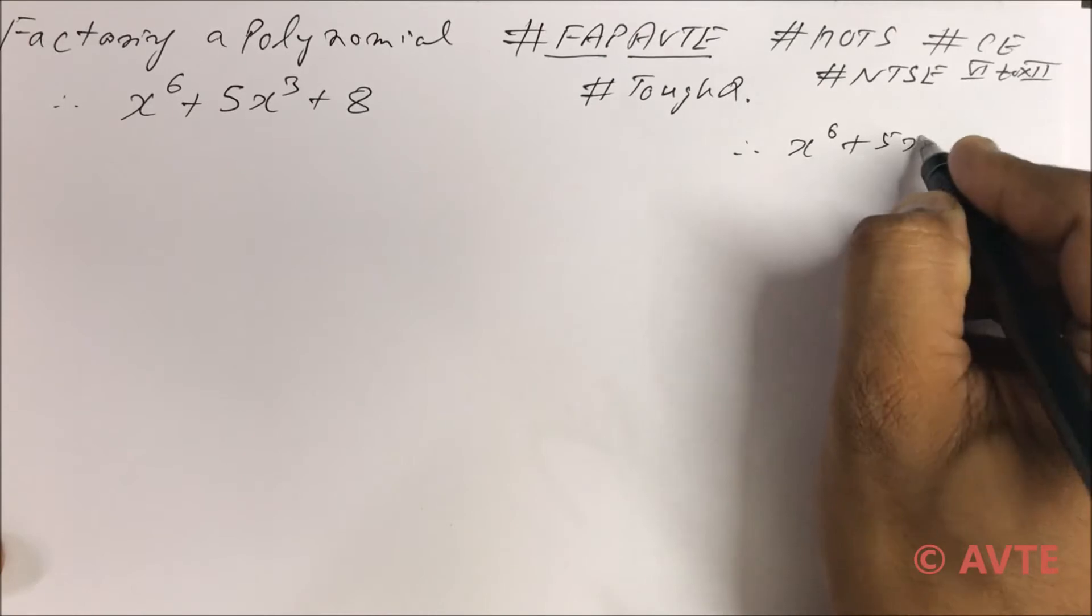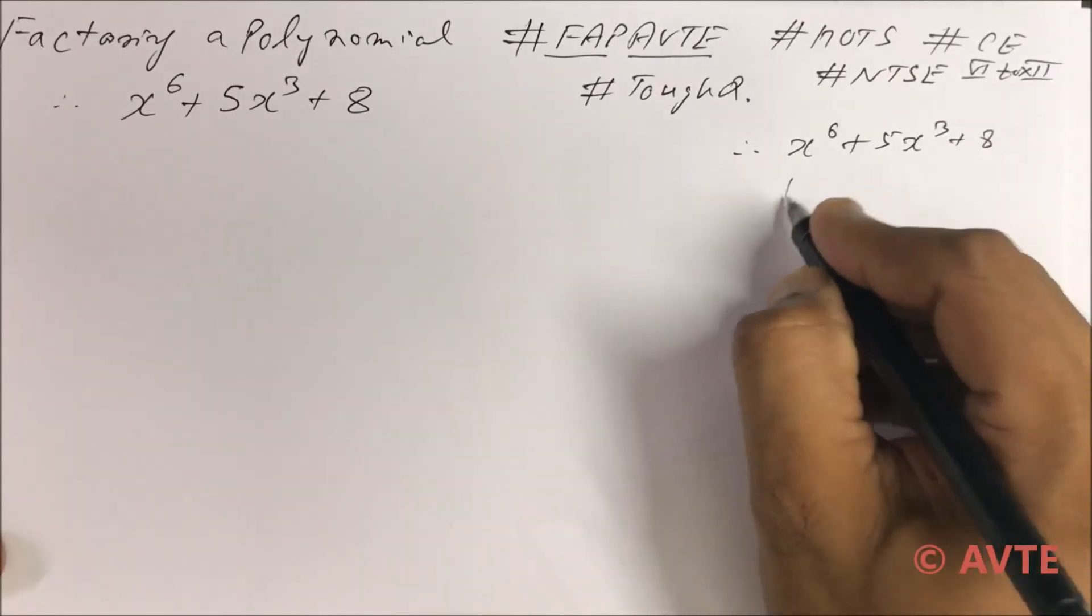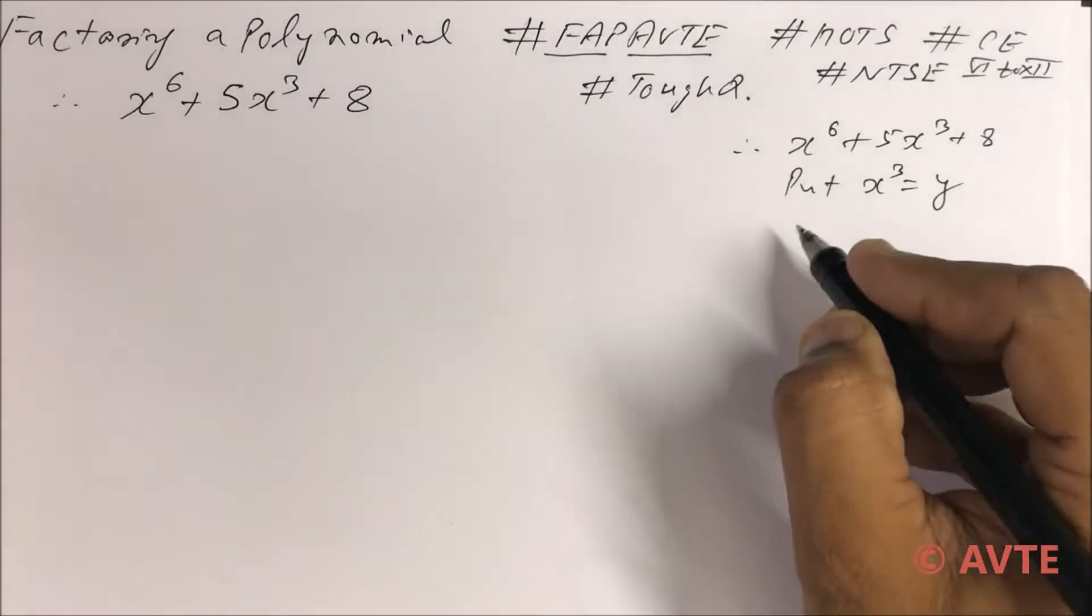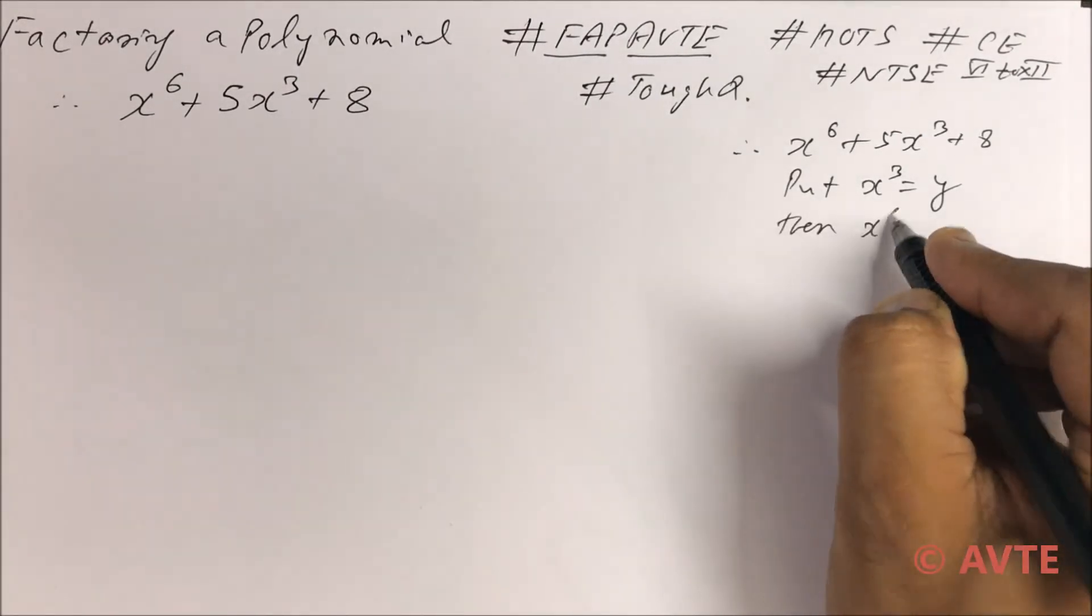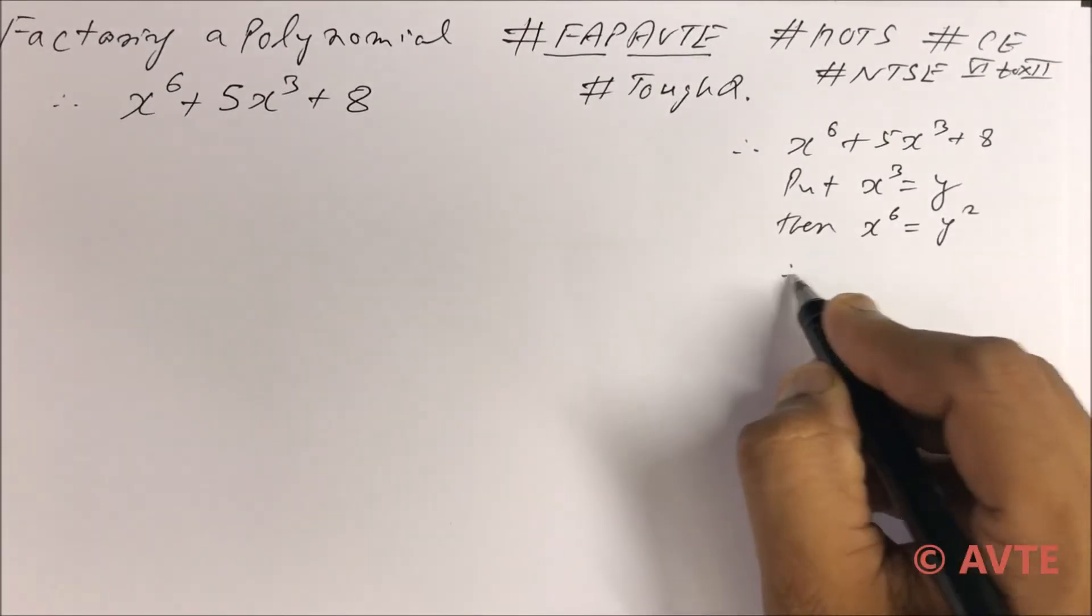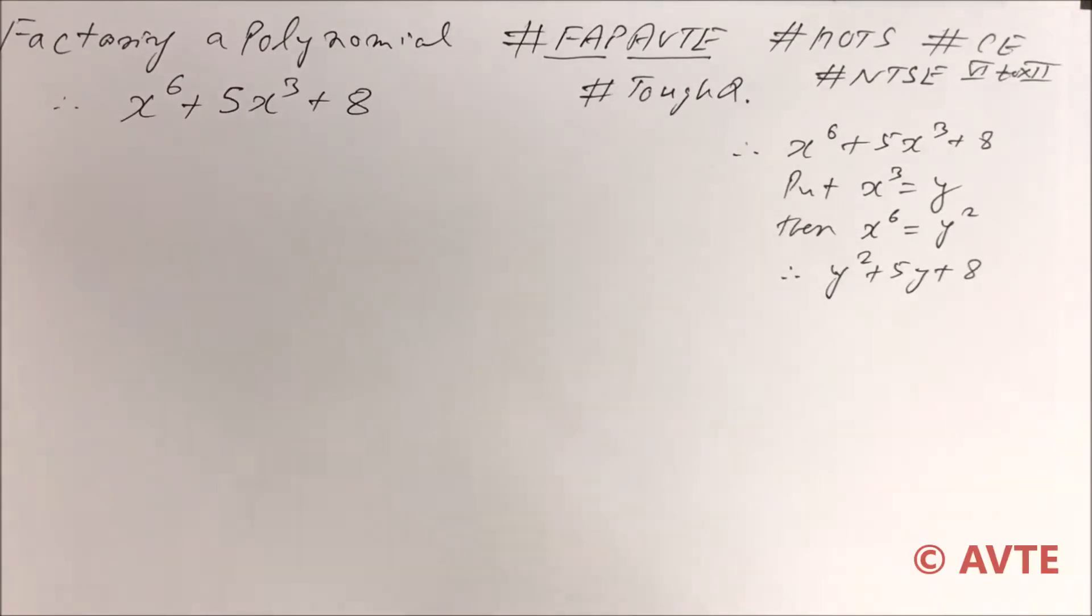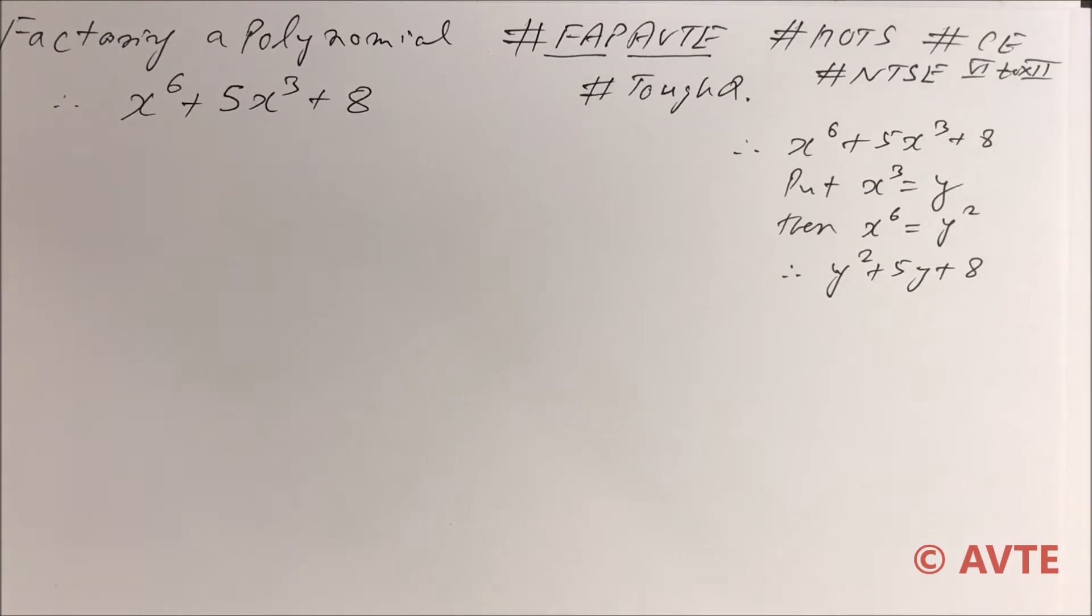If we go like this style, we put x cube is equal to y, then x raised to the power 6 is y square, y square plus 5y plus 8. So nothing is in our hand. We cannot factorize it.